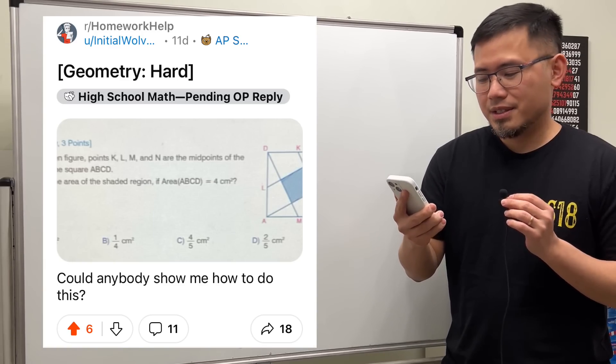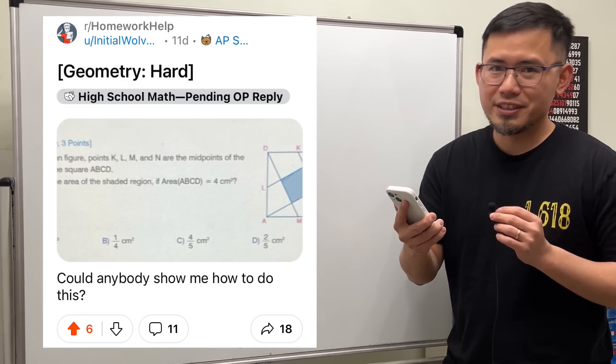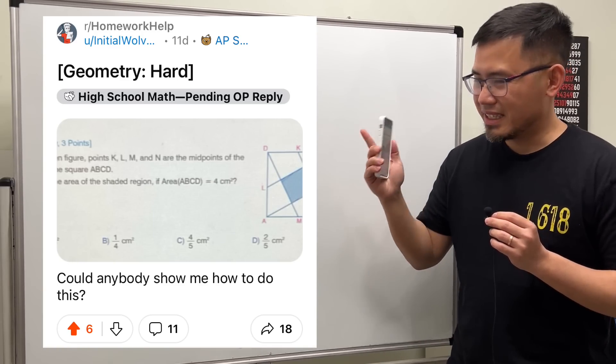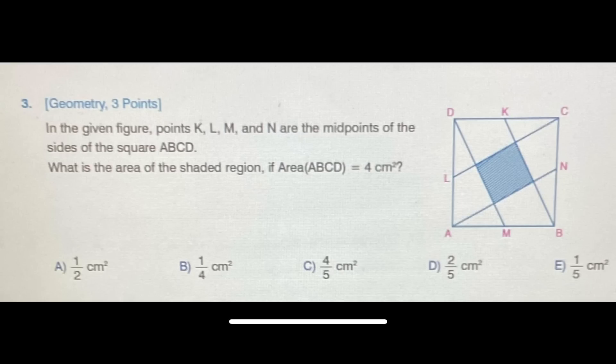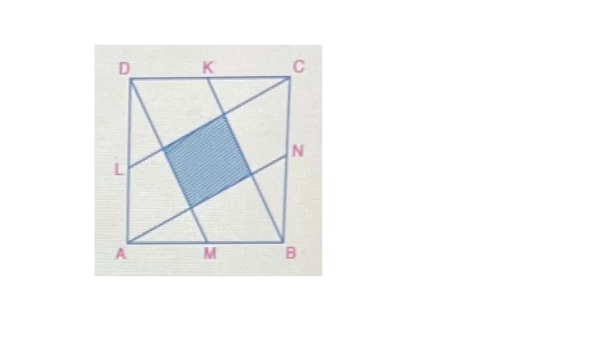Geometry, hard? Could anybody show me how to do this? Of course, let's have a look. Firstly, again, the whole area right here is four, and then all these points right here are the midpoints, right?